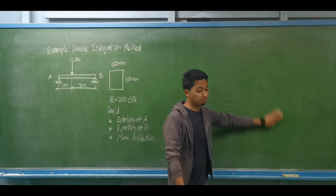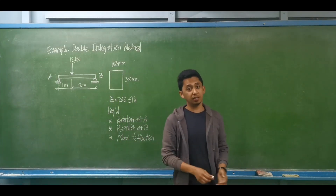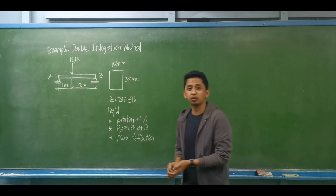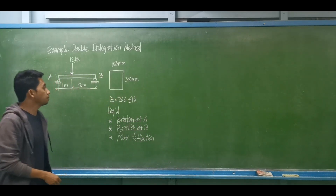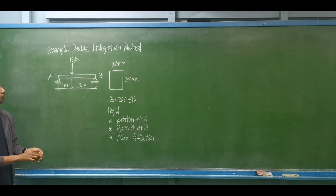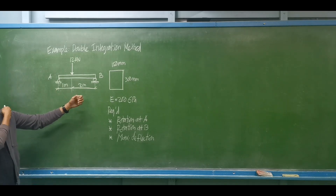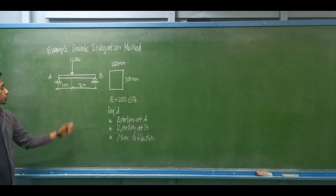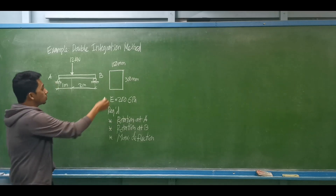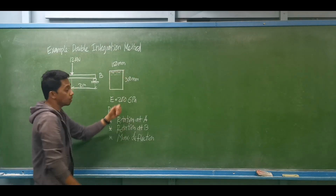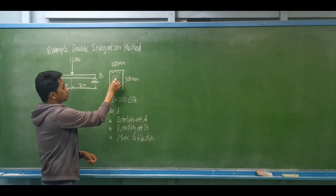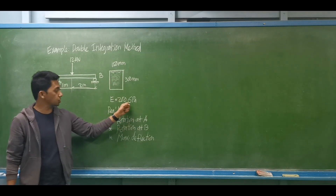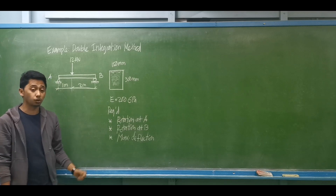So this is an example for the double integration method. We have a beam with a 3-meter span, loaded with 12 kN at a distance of 1 meter from A. The beam has a dimension of 150 mm by 300 mm, and the modulus of elasticity is 200 gigapascals.